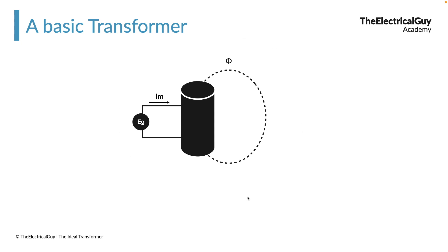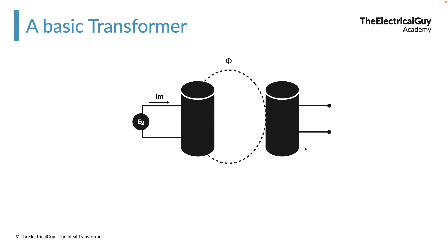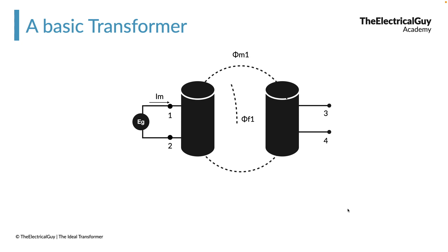Now we will bring one more coil near to this first coil. The moment we bring the second coil near our first coil, some part of the flux will get linked with coil number two by mutual inductance. As we saw in the previous lesson, because of Faraday's law of electromagnetic induction, a voltage E2 will be generated at the terminals of the second coil — terminals three and four. Notice there is no physical connection between these two coils, yet voltage is generated across the second coil.